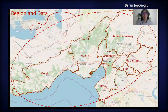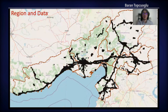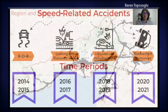I'd like to start with the region and the data. The middle-southern part of Turkey, including Mersin, Adana, and other five cities, was selected as the study area. Traffic accident data between the years 2014 and 2021 were geographically filtered. The types rollovers, run-off-road, crashing into a stationary vehicle, and collision with an object are classified as speed-related accidents. Speed-related accident data were divided into two-year periods, and the last period, 2020 and 2021, were considered as the years with mobility restrictions due to pandemic conditions.